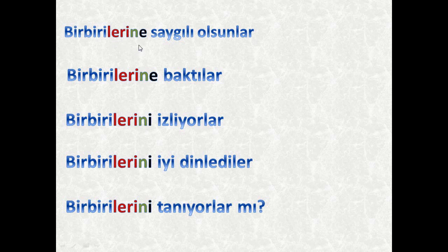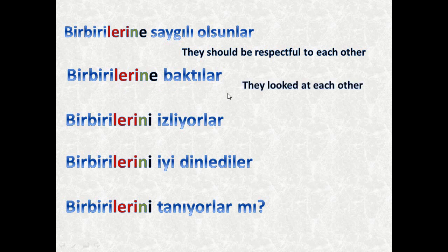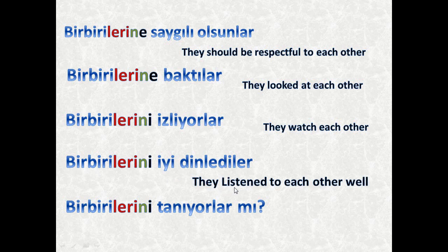Birbirini saygılı olsunlar — this is an imperative form meaning they should be respectful to each other. Birbirine baktılar — they looked at each other. Birbirlerini izliyorlar — they watch each other. Birbirlerini iyi dinlediler — they listened to each other well. Birbirlerini tanıyorlar mı? — do they know each other?